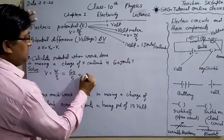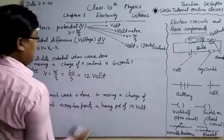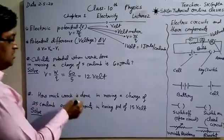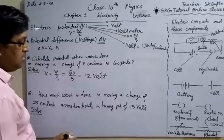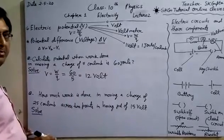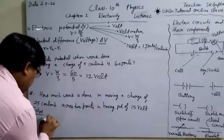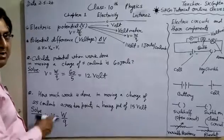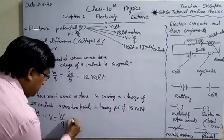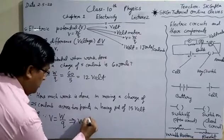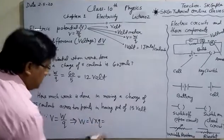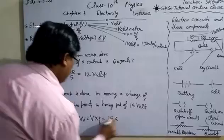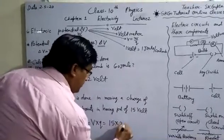Next question: How much work is done in moving a charge of 25 coulomb across two points having potential difference of 15 volt? We have to calculate work. Work is equal to V into Q. Here 15 volt, Q is equal to 25 coulomb. Then we get 375 joule.